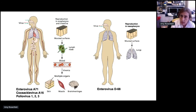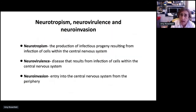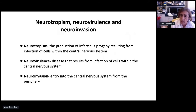To understand this, I need to define three terms: neurotropism, neurovirulence, and neuroinvasion. Neurotropism is the ability to produce infectious virus progeny after infection within cells of the central nervous system. Neurovirulence is the ability to cause disease from infection of CNS cells. And neuroinvasion is the entry from the periphery into the CNS. An example of a neurotropic, neuroinvasive virus is mumps — but it is not neurovirulent, as there is no neurologic disease associated with that infection.